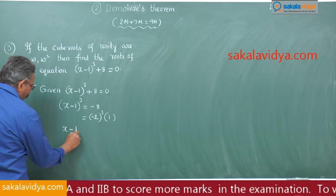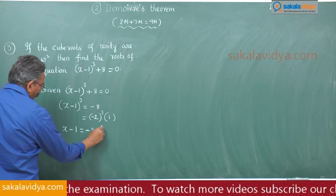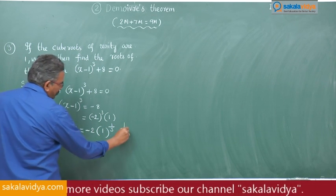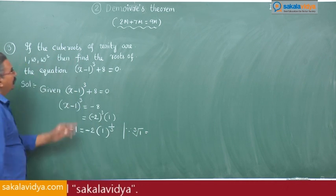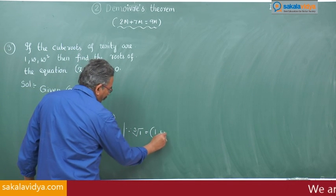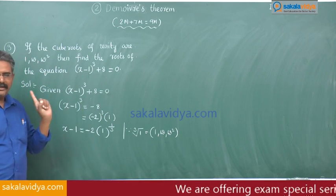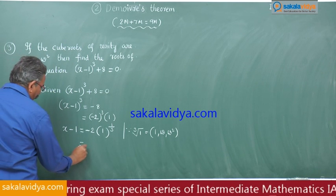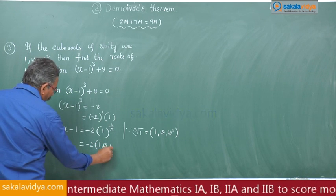Taking the cube root of both sides, x minus 1 is equal to -2 times the cube root of 1, that is -2 times 1 to the power of 1/3. The cube roots of 1 are 1, omega, and omega squared — one real root and two imaginary roots. So we can write x minus 1 equals -2 times 1, omega, or omega squared.